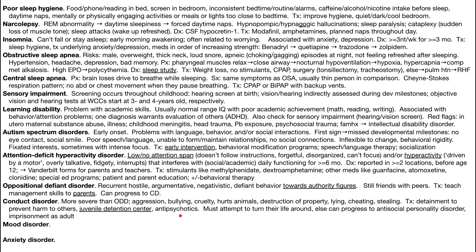Conduct disorder is more severe, characterized by aggression, bullying, and cruelty. These people hurt animals, destroy property, lie, cheat, and steal. They are defiant toward both authority figures and peers — they may bully or hurt peers. Treatment unfortunately often involves detainment to prevent harm to others, such as juvenile detention centers. Antipsychotics may be used in extreme cases. If these people don't turn their lives around, it can progress to antisocial personality disorder as an adult over 18, and many end up in prison.